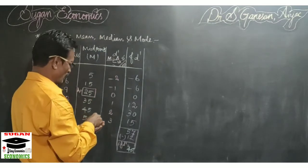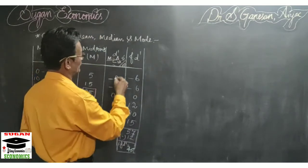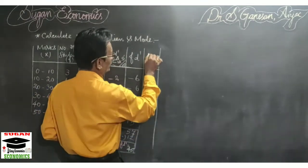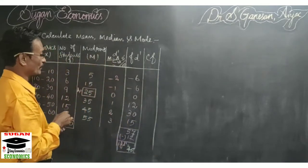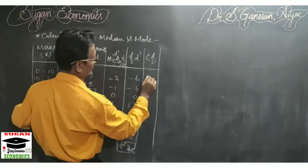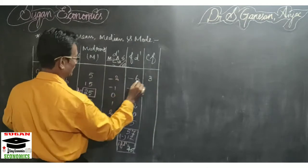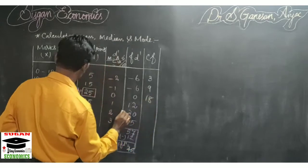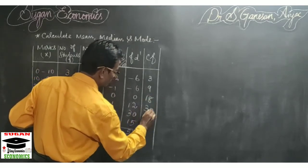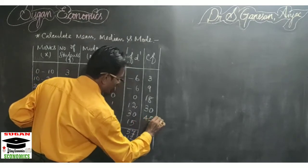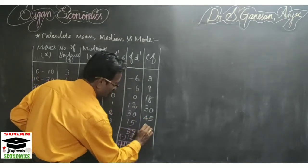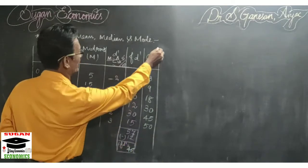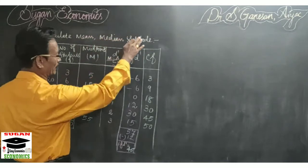Now we have to add one more column for the calculation of median: the cumulative frequency, cf. To calculate it, take the first frequency as the first cf, then 3 plus 6 equals 9, 9 plus 9 equals 18, 18 plus 12 equals 30, 30 plus 15 equals 45, and 45 plus 5 equals 50. Our n is also equal to 50. Now all the calculations for mean, median and mode are ready.